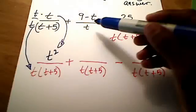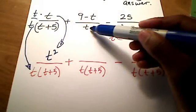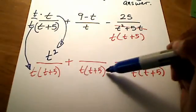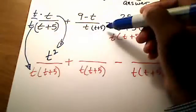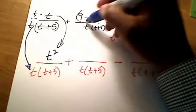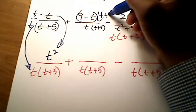Same thought process here. What do we need to do to this t to make it look like this denominator here? Well, it's missing the t plus 5. Well, if I do it to the bottom, if I multiply the bottom by t plus 5, I must also multiply the top by t plus 5.